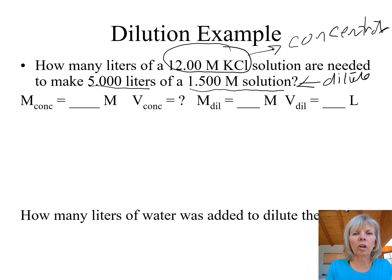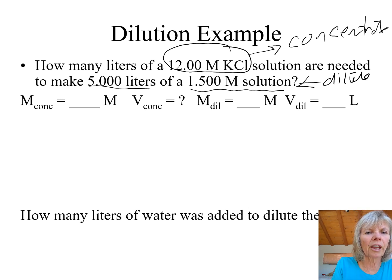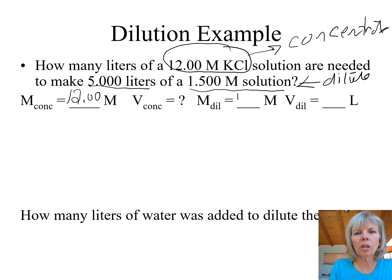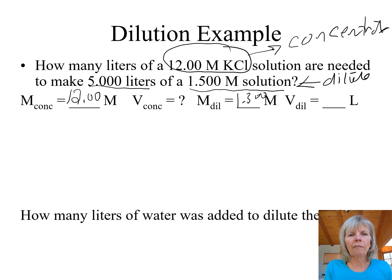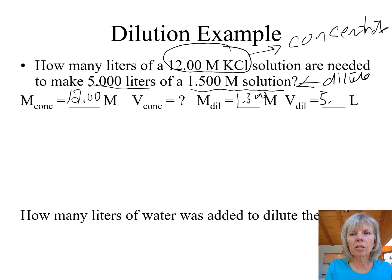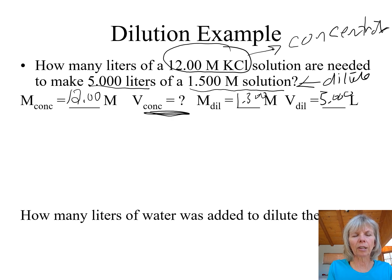For our molarities, the larger number is the concentrated one. So we write down: molarity of concentrated = 12 molar, molarity of dilute = 1.50 molar. We are given the volume we want to make of our new solution — the volume of the dilute is 5 liters. The volume of the concentrated is what we're trying to find.